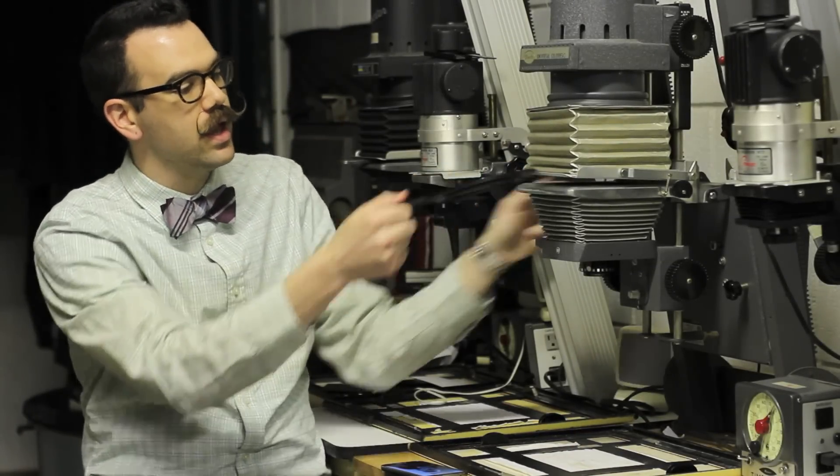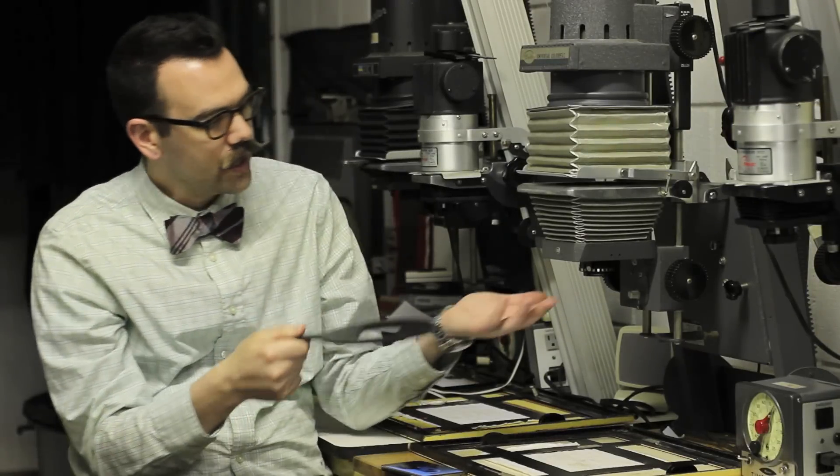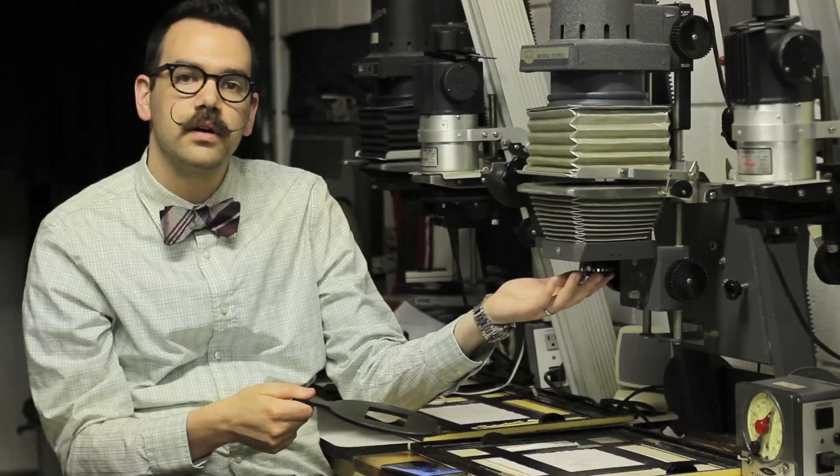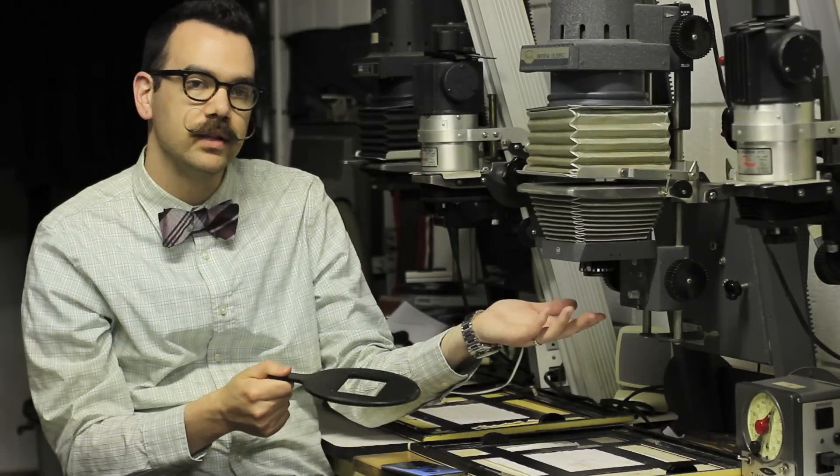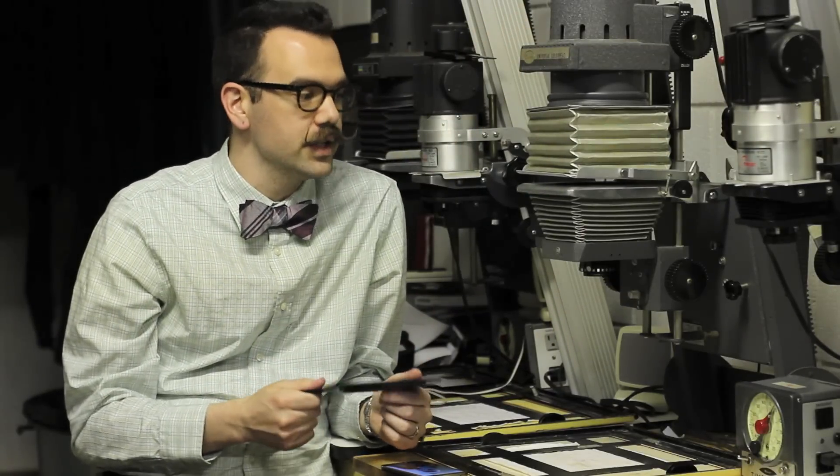And the next step is to load it into the enlarger. Let's take a look at that. With this enlarger, the Bessler 2-3C, what we're going to do is actually grab a 6x9 negative carrier and I've loaded the 80mm lens which is the medium format lens. The height of the head doesn't really matter because we're not using the light from the condenser.